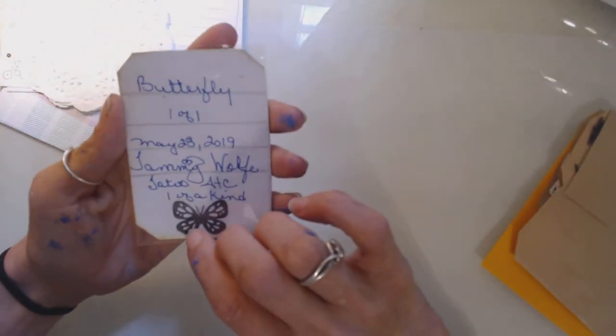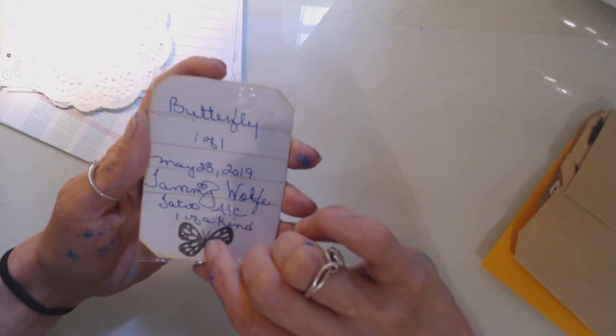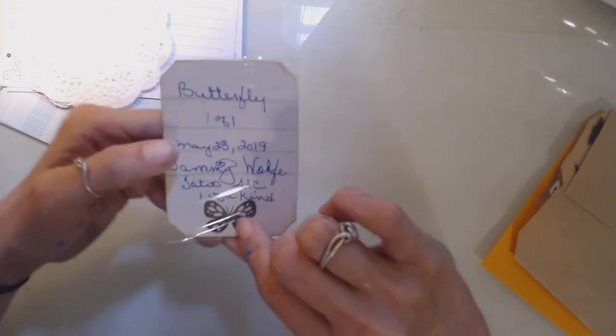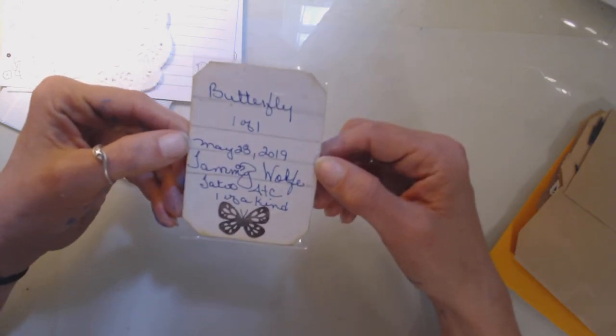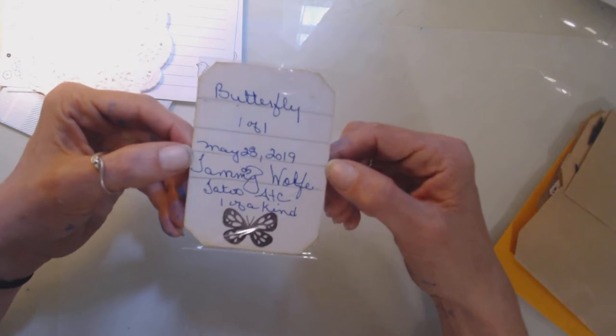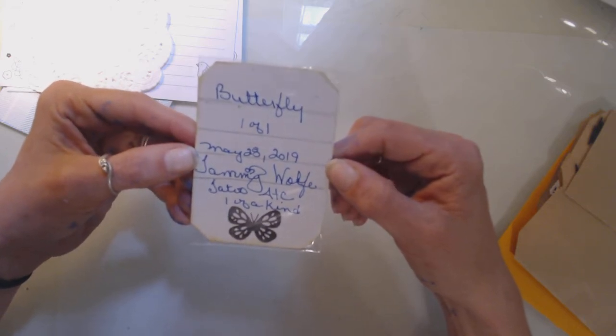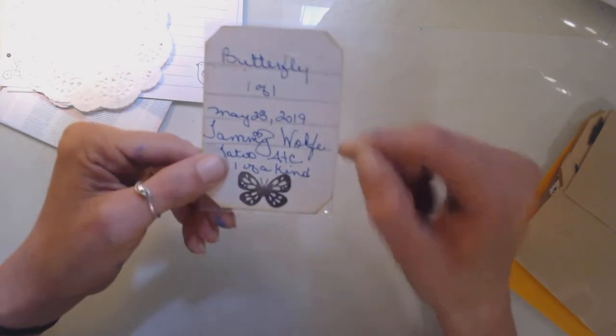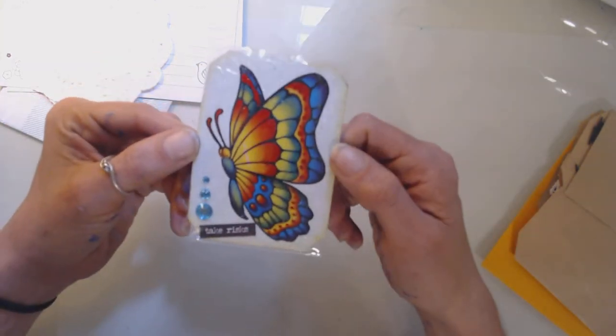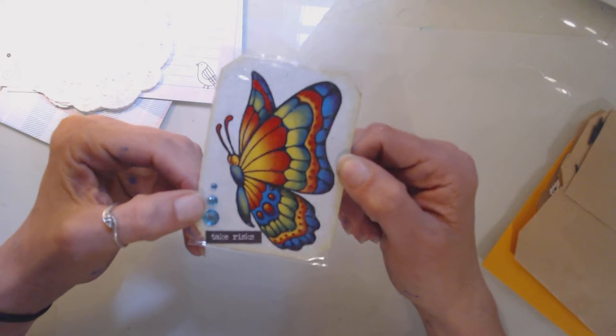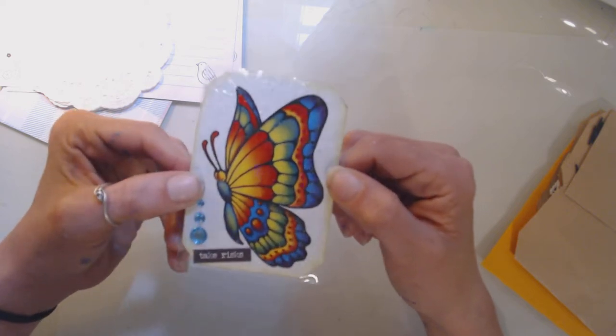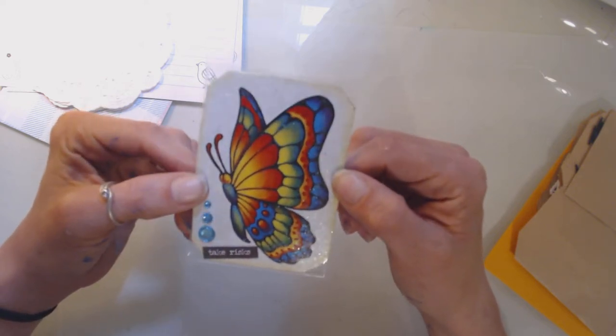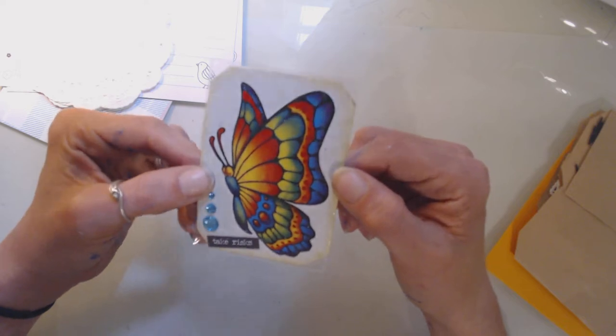It's a flutter by and it's an ATC. She says butterfly one of one. Oh, I got a one of a kind. May 28, 2019, Tammy Wolf, tattoo ATC, one of a kind. Oh, look at that one of a kind, it's a flutter by. Look at that. I love how she's done this. I love these colors, very very nice. Oh, I love that. Love it, love it, love it.